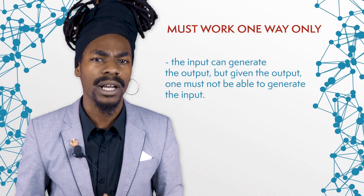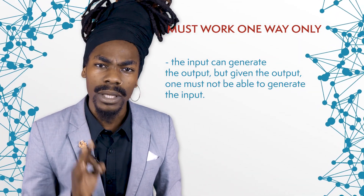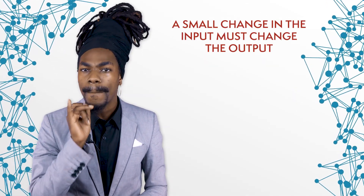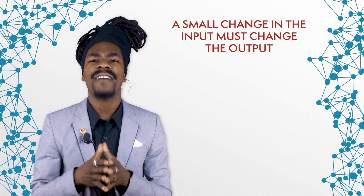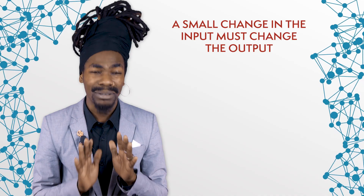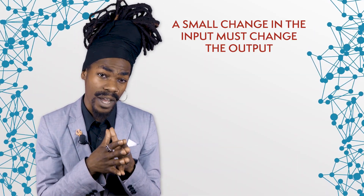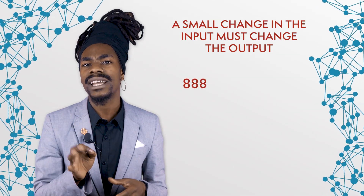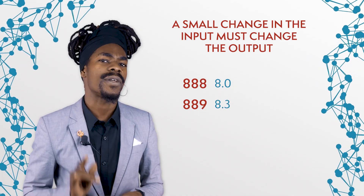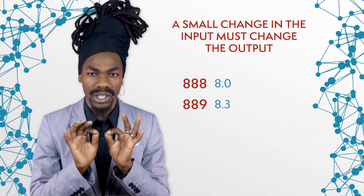For a computer, it is theoretically possible to reverse to find the input. However, the longer hash you have, the harder it becomes to solve it. Number four, a small change in the input must change the output massively. Even after a minor change in the input, two outputs would look completely different. In this example, our little hash function also fails — if I change 888 to 889, the output changes from 8.0 to 8.3. It matters because otherwise breaking the hash is too easy.